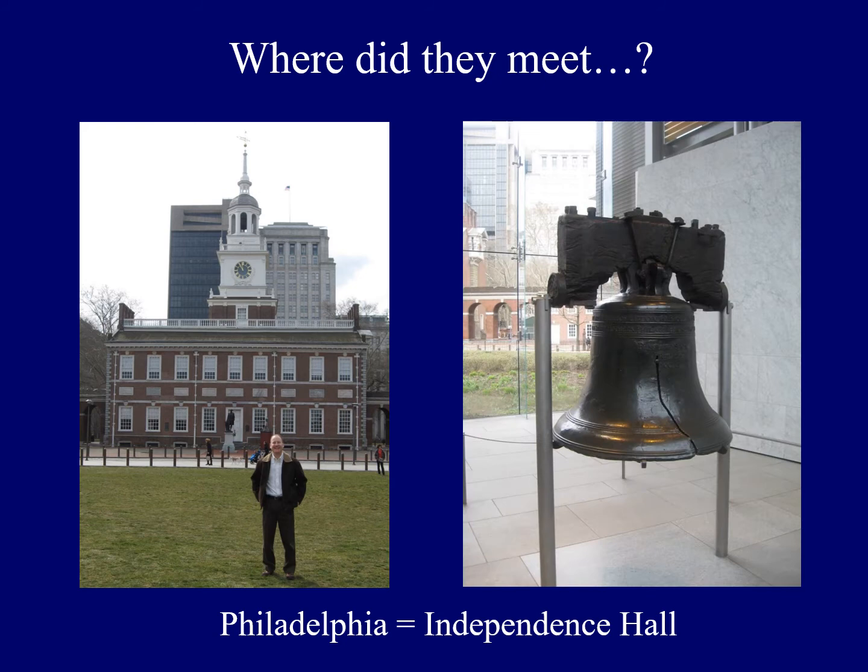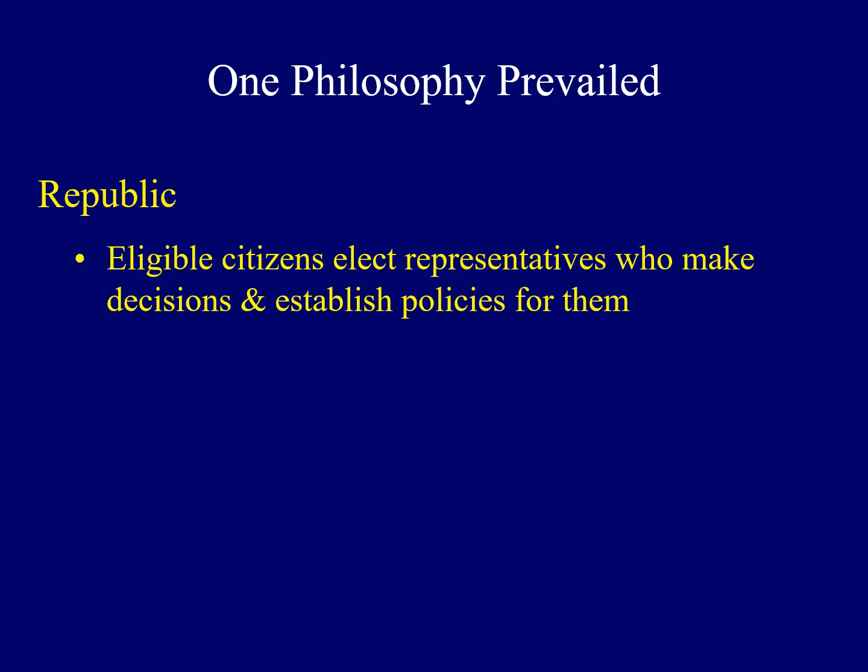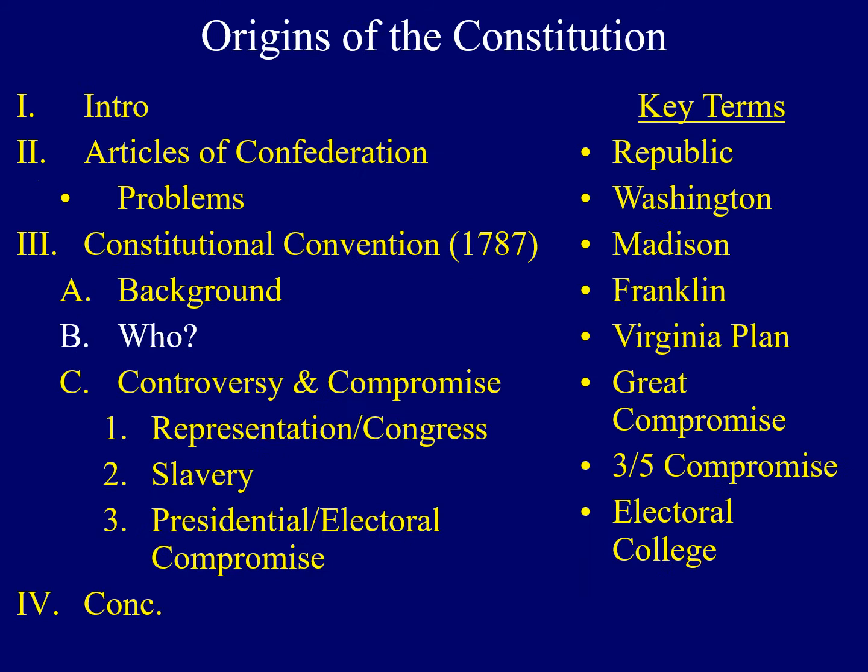One of the things I'll point out is the division among the delegates to the Constitutional Convention, but there was one philosophy or one idea that united all of them — they wanted to establish a republic. A republic is when eligible citizens elect people or representatives who make decisions and establish policies for them. In the United States, we live in a type of democracy, and that type of democracy is a republic.